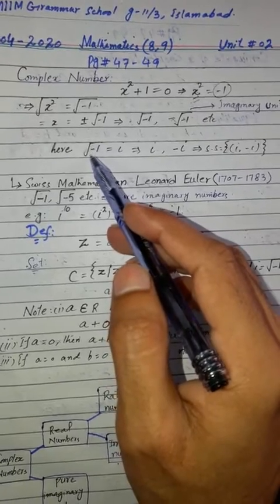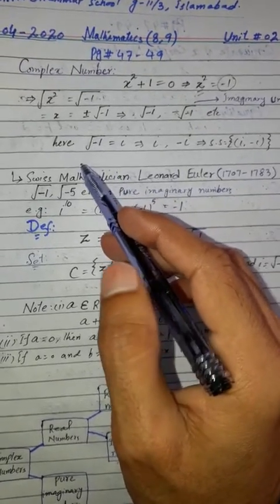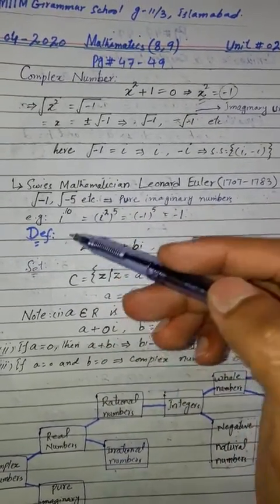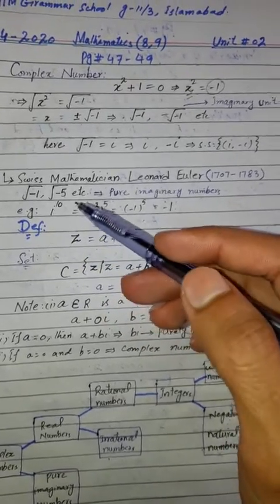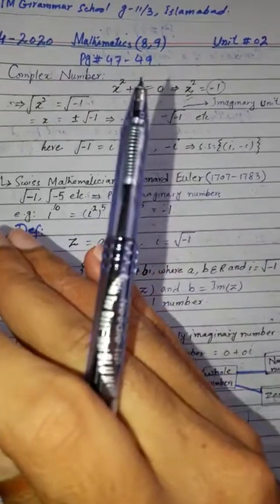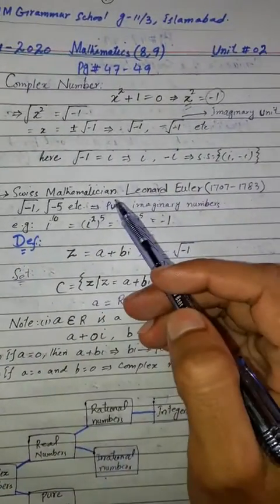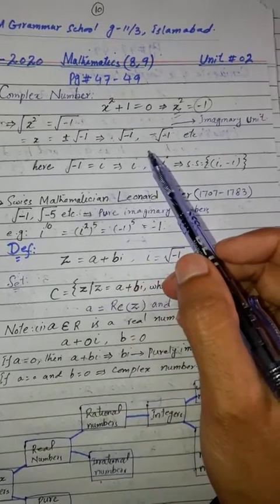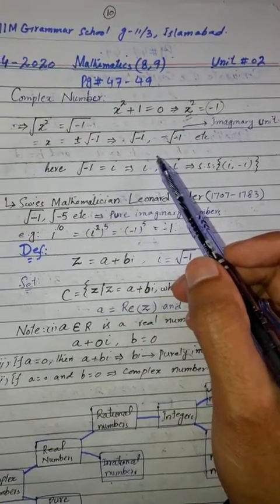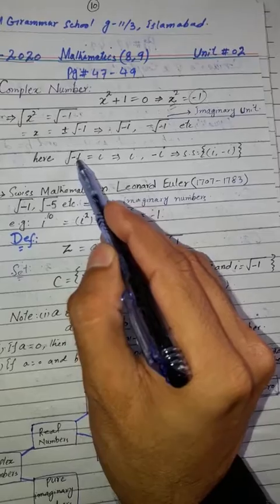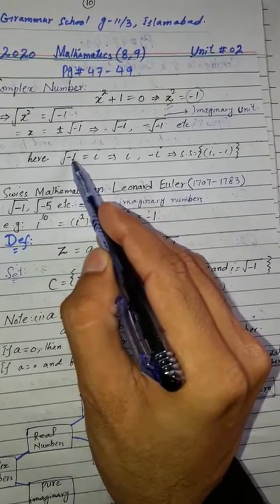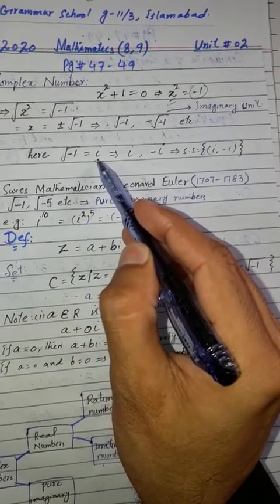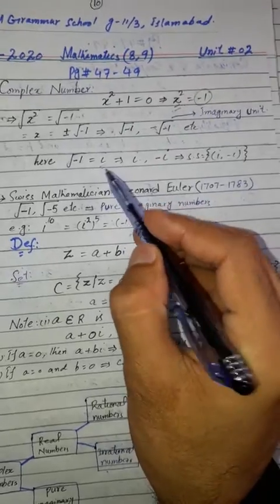So mathematicians worked on this problem and found a larger set of numbers — what we call the complex number set. They defined the square root of minus 1 as iota, so iota equals the square root of minus 1, and iota squared equals minus 1.